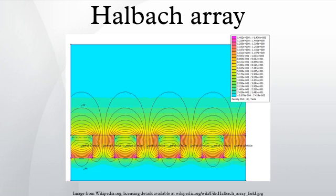In the 1980s, Lawrence Berkeley National Laboratory physicist Klaus Halbach independently invented the Halbach Array to focus particle accelerator beams.